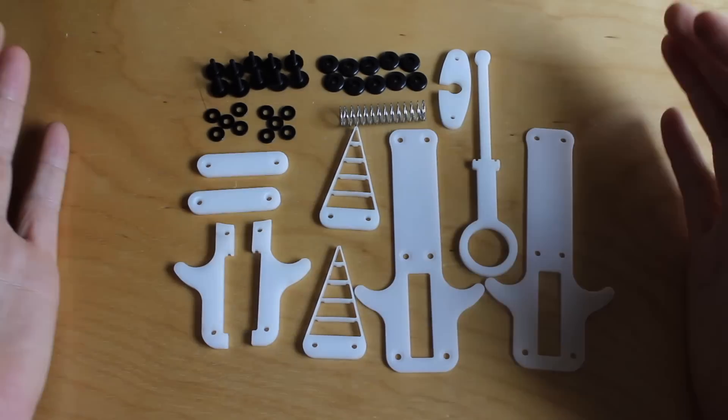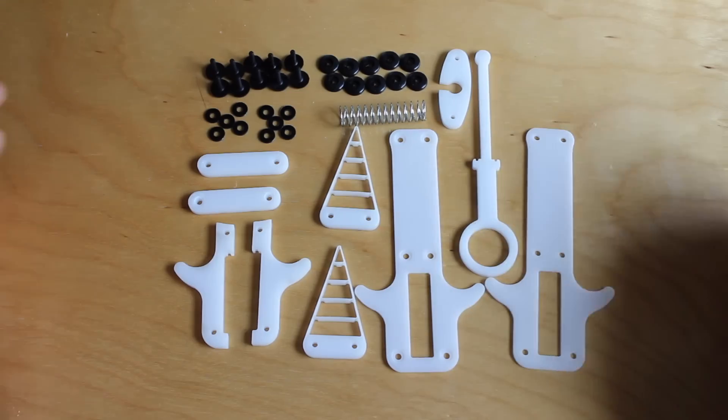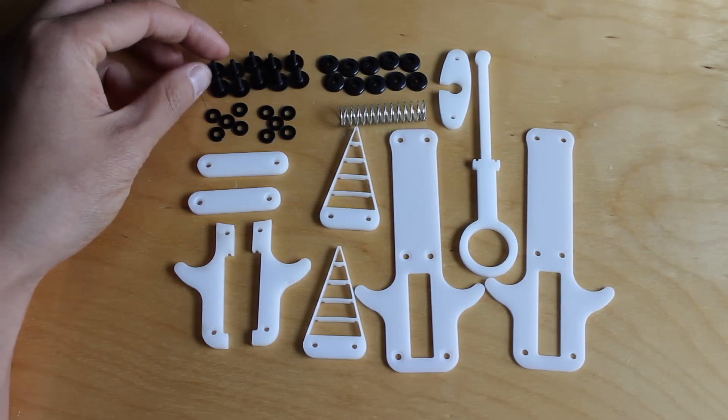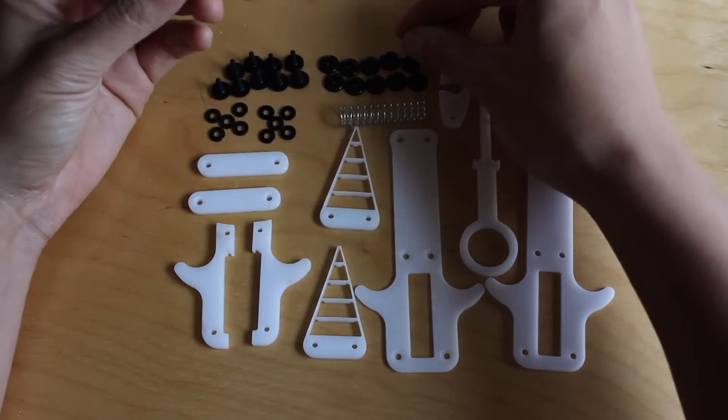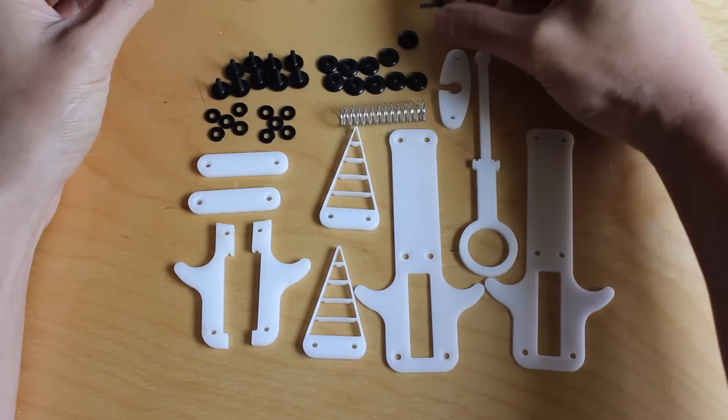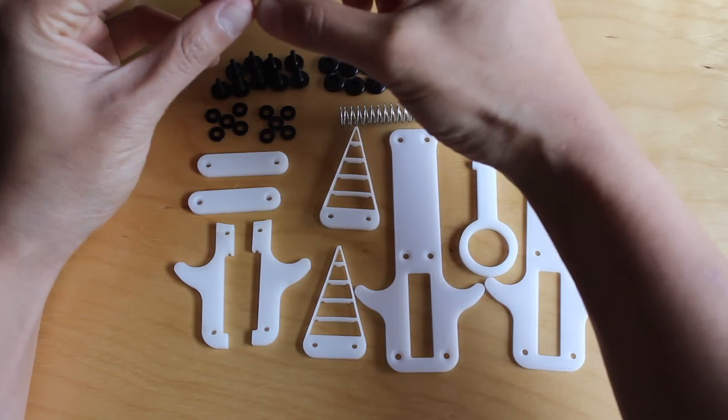Okay, so this is the full kit of parts needed to make a gripper assembly. I'm using these two-part snapped together rivets to hold everything together.